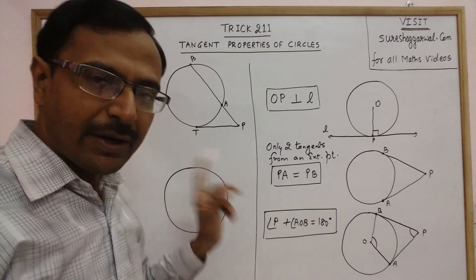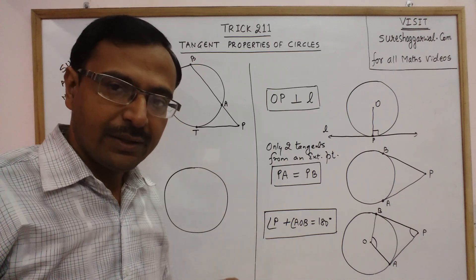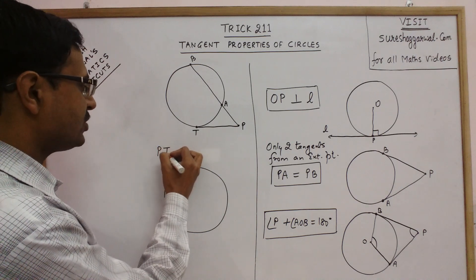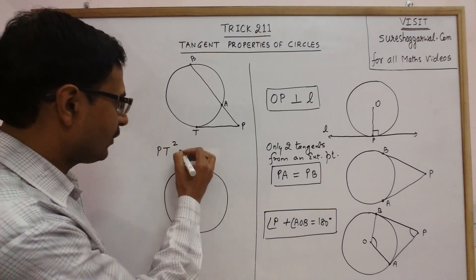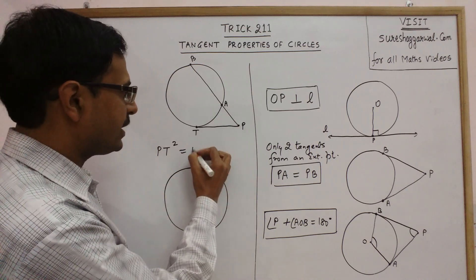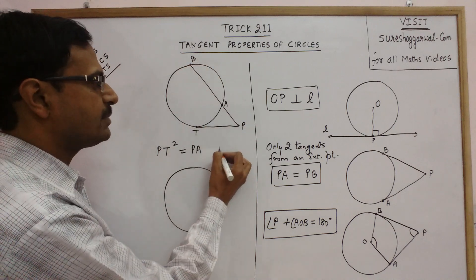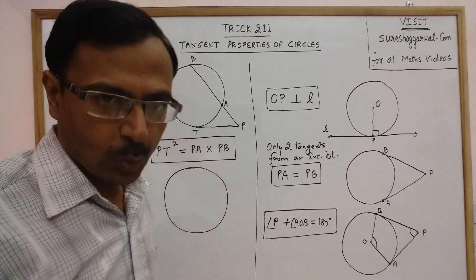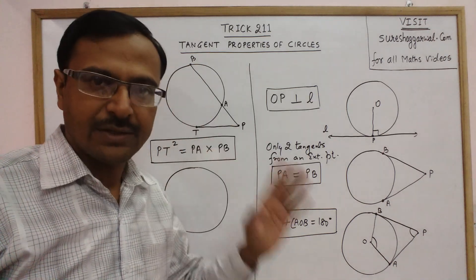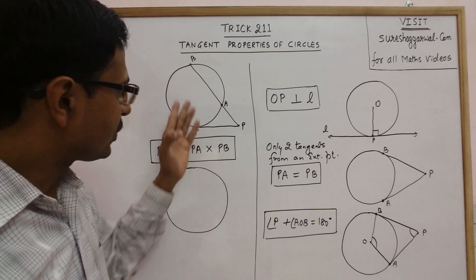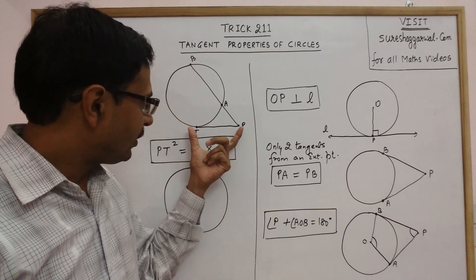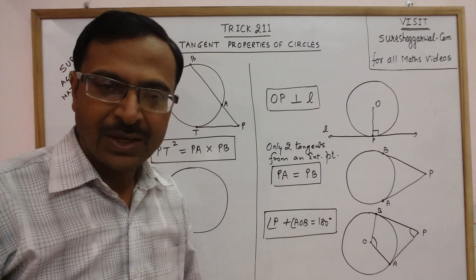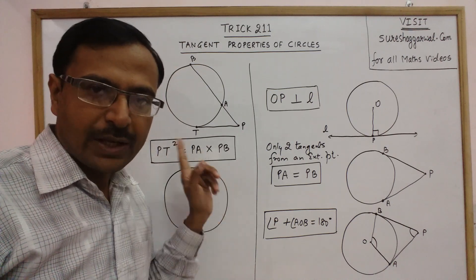If you have one tangent and one secant, they can be related using an important relationship: the square of the tangent, that is PT², will always be equal to the product of the distance of point A from P (PA) and the distance of point B from P (PB). So PT² = PA × PB. You get many exam questions on this where you are given the length of the tangent or one part of the secant and asked to find the unknown. This is the property relating tangent and secant.